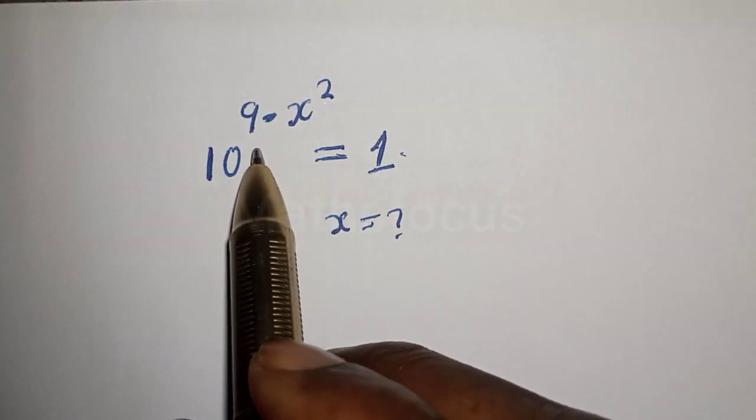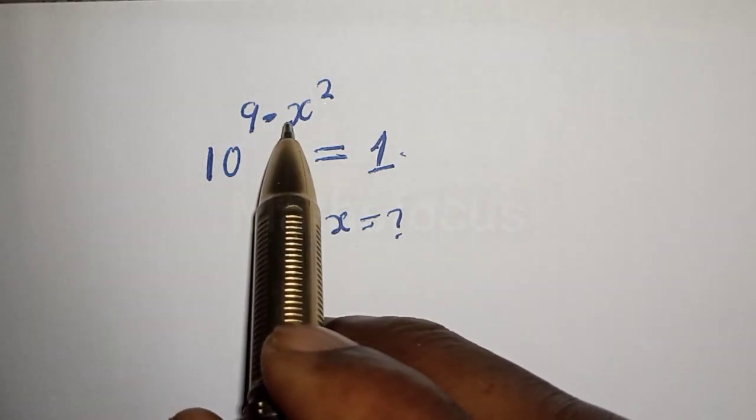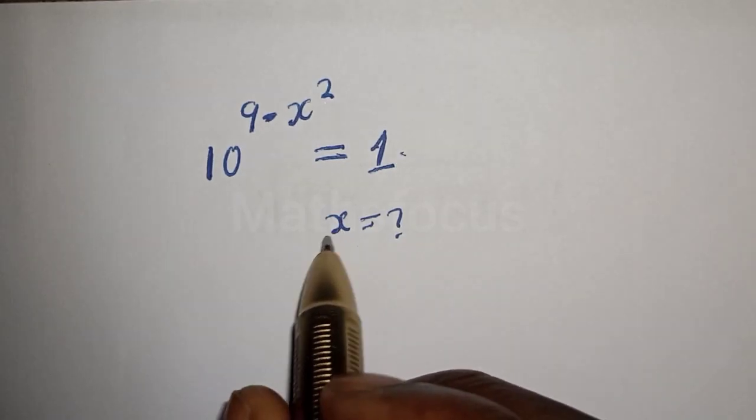Hello, how to solve for x from this equation: 10 raised to power 9 minus x squared equals 1. Solution.